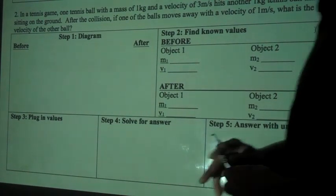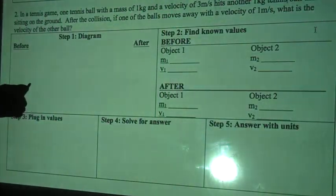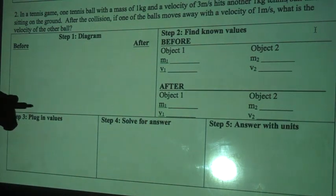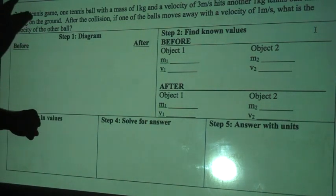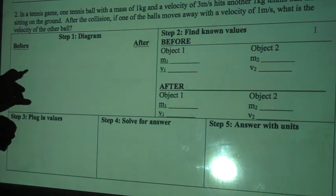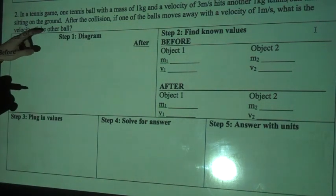Number two says: in a tennis game, one tennis ball with a mass of one kilogram and a velocity of three meters per second hits another one kilogram tennis ball that is sitting on the ground.